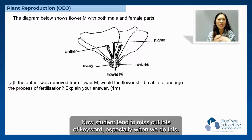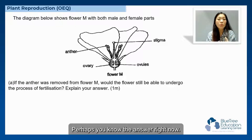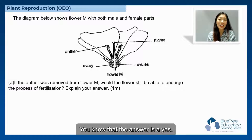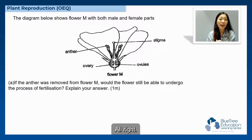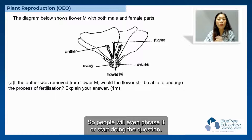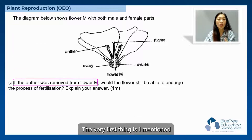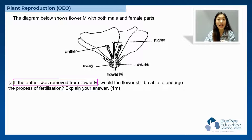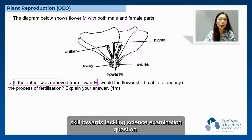Students tend to miss out lots of keywords especially when tackling this type of question. Perhaps you know the answer right now even while watching the video — you know that the answer is yes. But the thing is, you do not know how to phrase the sentence. Highlighting the important information and keywords is an essential skill towards tackling science examination questions.